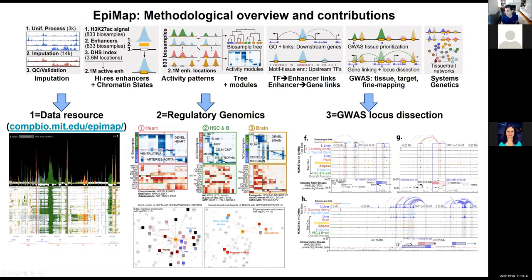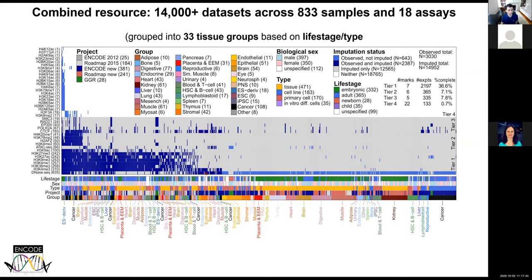There is an enormous data resource I encourage you to explore for all 14,000 epigenomes across 800 samples at compbio.mit.edu/epimap, which includes browsers and all figures. We've provided insights for gene regulation focusing on heart, blood, brain, and 800 different tissues and cell types — identifying activity modules, regulators that tightly control them, and the regulatory circuitry of motifs. Across 30,000 GWAS loci you can find predictions linking non-coding regions to their likely target genes.